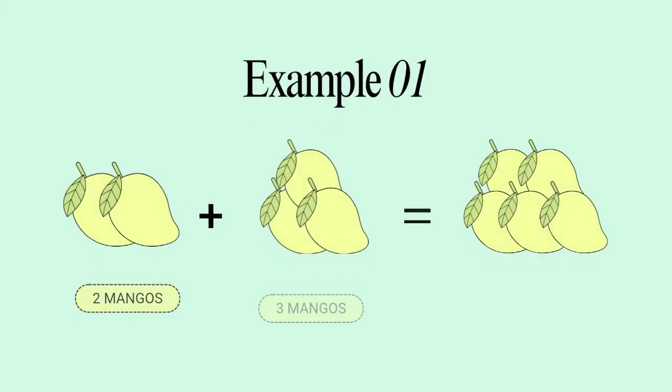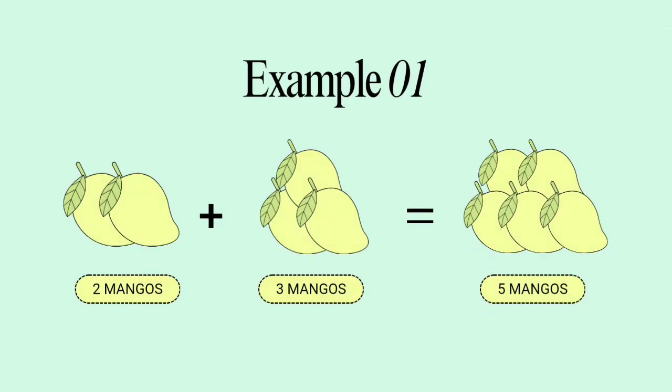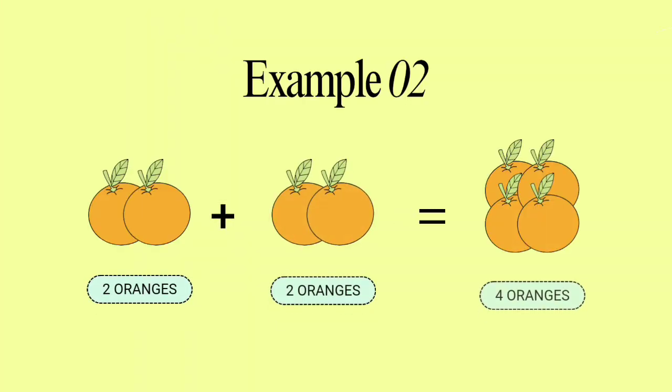Two mangoes plus three mangoes is equal to five mangoes. If you have two oranges and your friend also has two oranges, then you both have a total of four oranges.